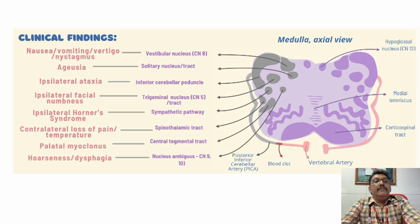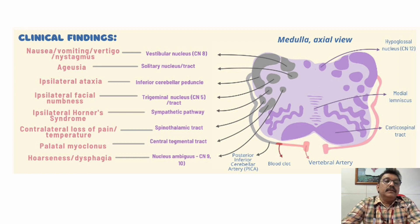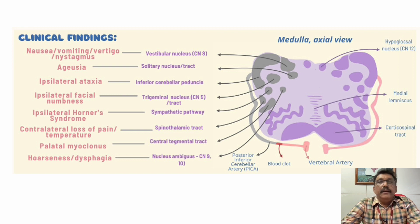The clinical findings of lateral medullary syndrome include: nausea and vomiting, vertical nystagmus, loss of taste sensation, ataxia, facial numbness or facial sensory loss, Horner's syndrome with small pupil and sunken eyes, contralateral loss of pain and temperature due to spinothalamic tract involvement, palatal myoclonus, and hoarseness and dysphagia due to ninth and tenth cranial nerve involvement.